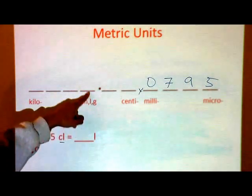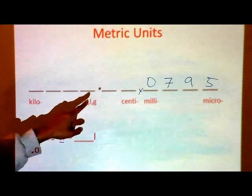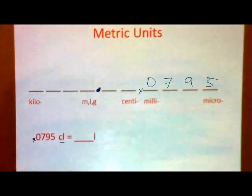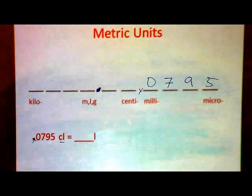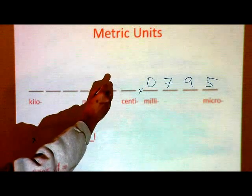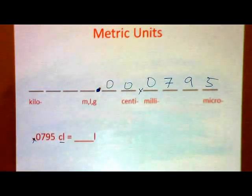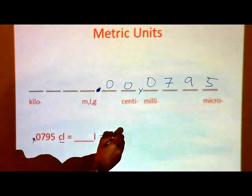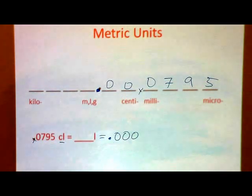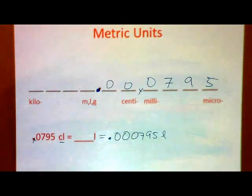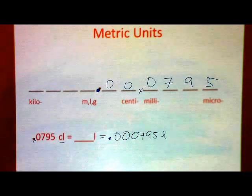This decimal point and that decimal point are the same thing, so all these numbers are written to the right of the decimal point. Bring the number up — .0795 — with each space holding one digit. Find where you're going: the liter column. The decimal point in the liter column is to the right. Fill in the two blanks with zero. The answer is .000795 liters. Hope you got that problem right.